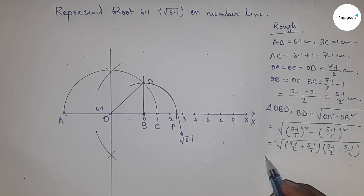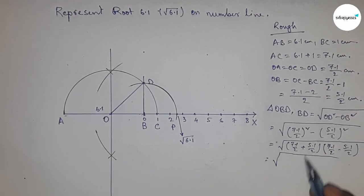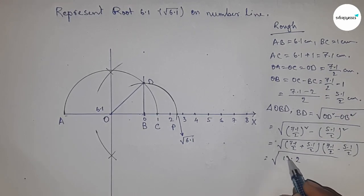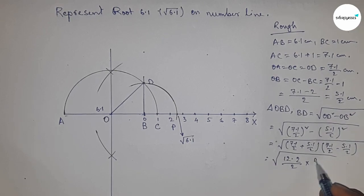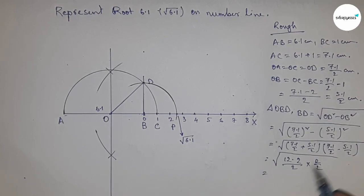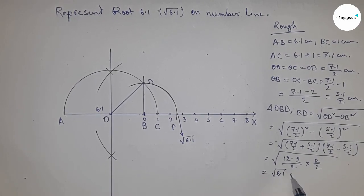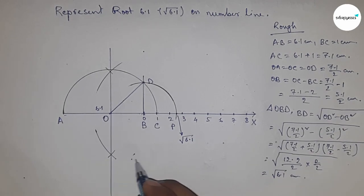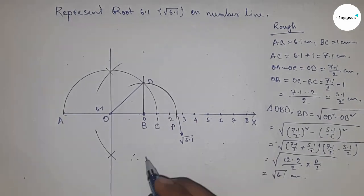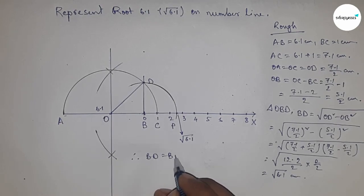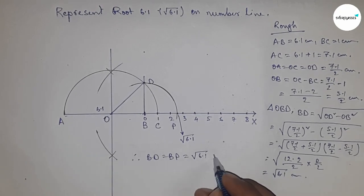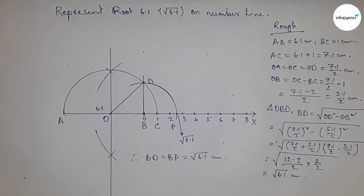From this, we get 12.2 by 2 times 2 by 2, which equals 6.1 centimeters. Therefore, distance BD and BP are equal, so BD equals BP equals root 6.1 centimeters.